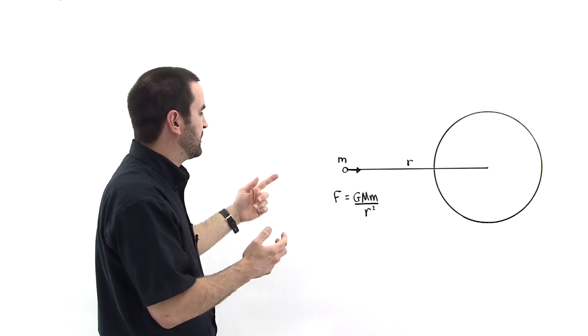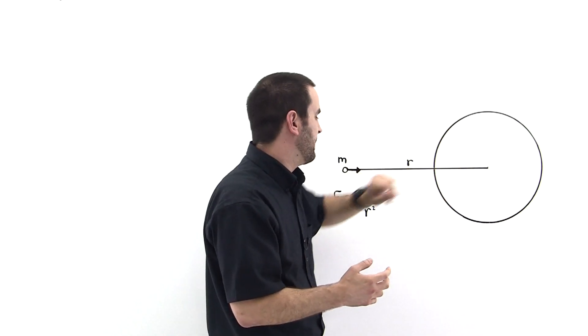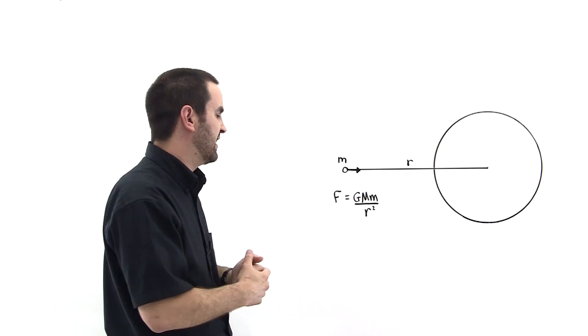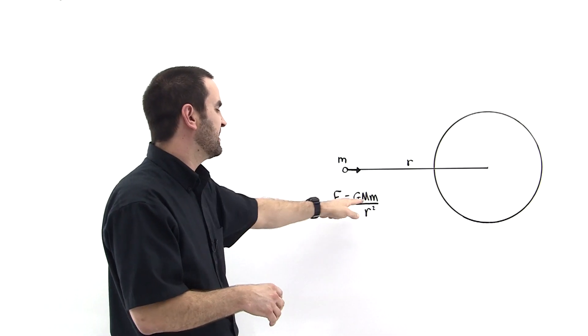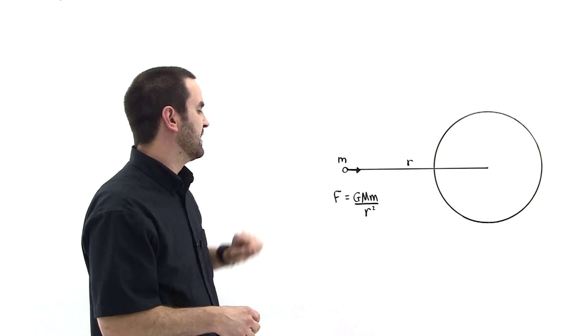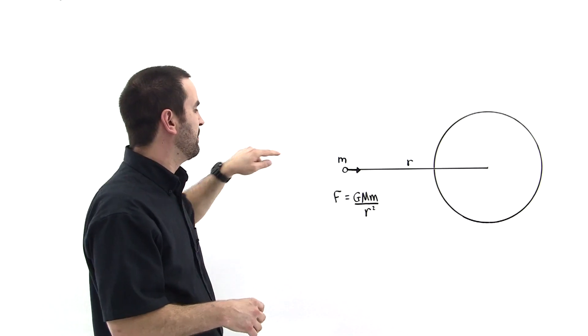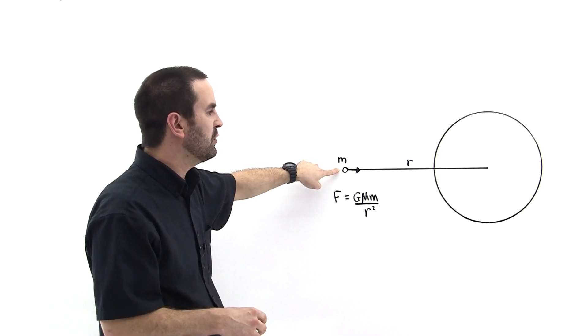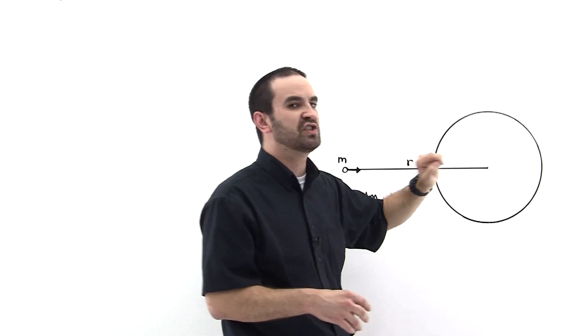So this is Newton's shell theorem for a mass outside of the shell. Next we'll consider what happens when a mass goes inside the shell and then we'll derive it. See you next time.